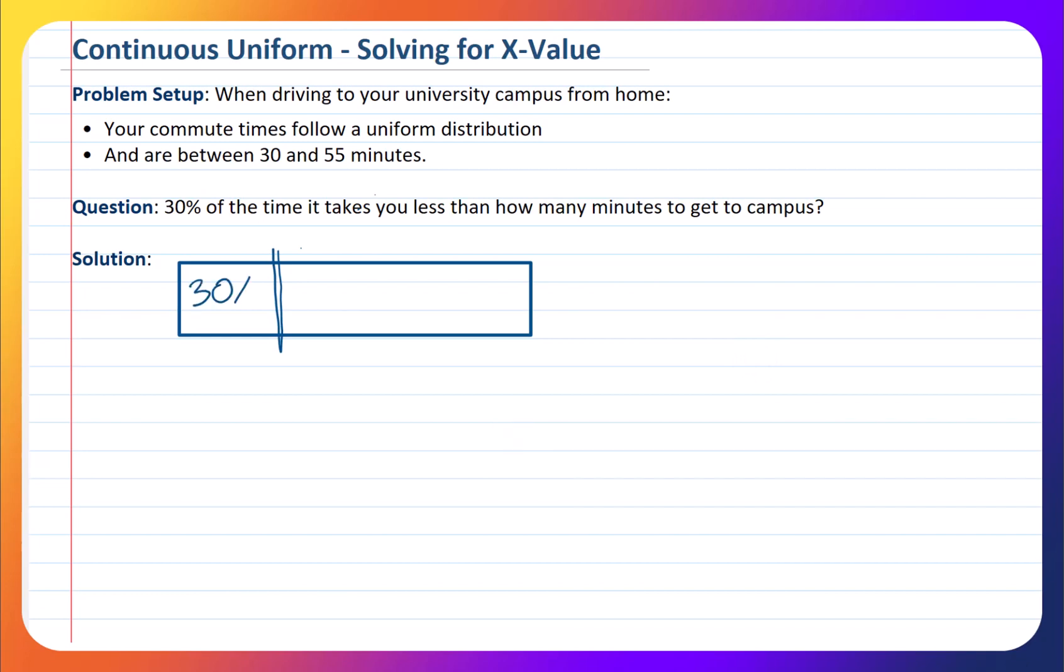And this 30% is going to be less than this amount of time, whatever that amount of time is. We don't know what it is, and that's what we're trying to solve for. What we also know is that all the times are always between 30 and 55 minutes. And we're looking for this value, this time amount, such that 30% of the times are below that amount.